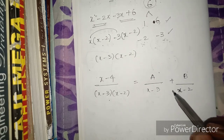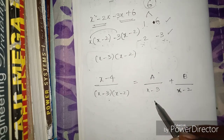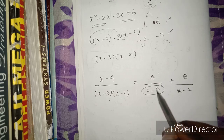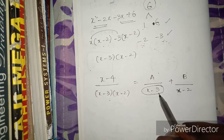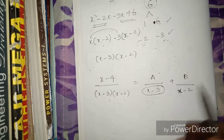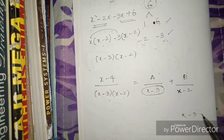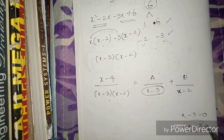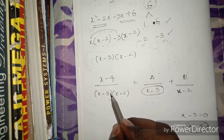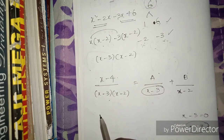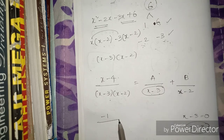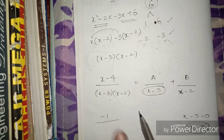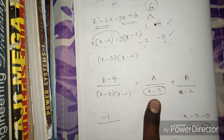Now what do we do? To find A, we use the term x - 3. That means x - 3 = 0, so x = 3. We substitute x = 3.